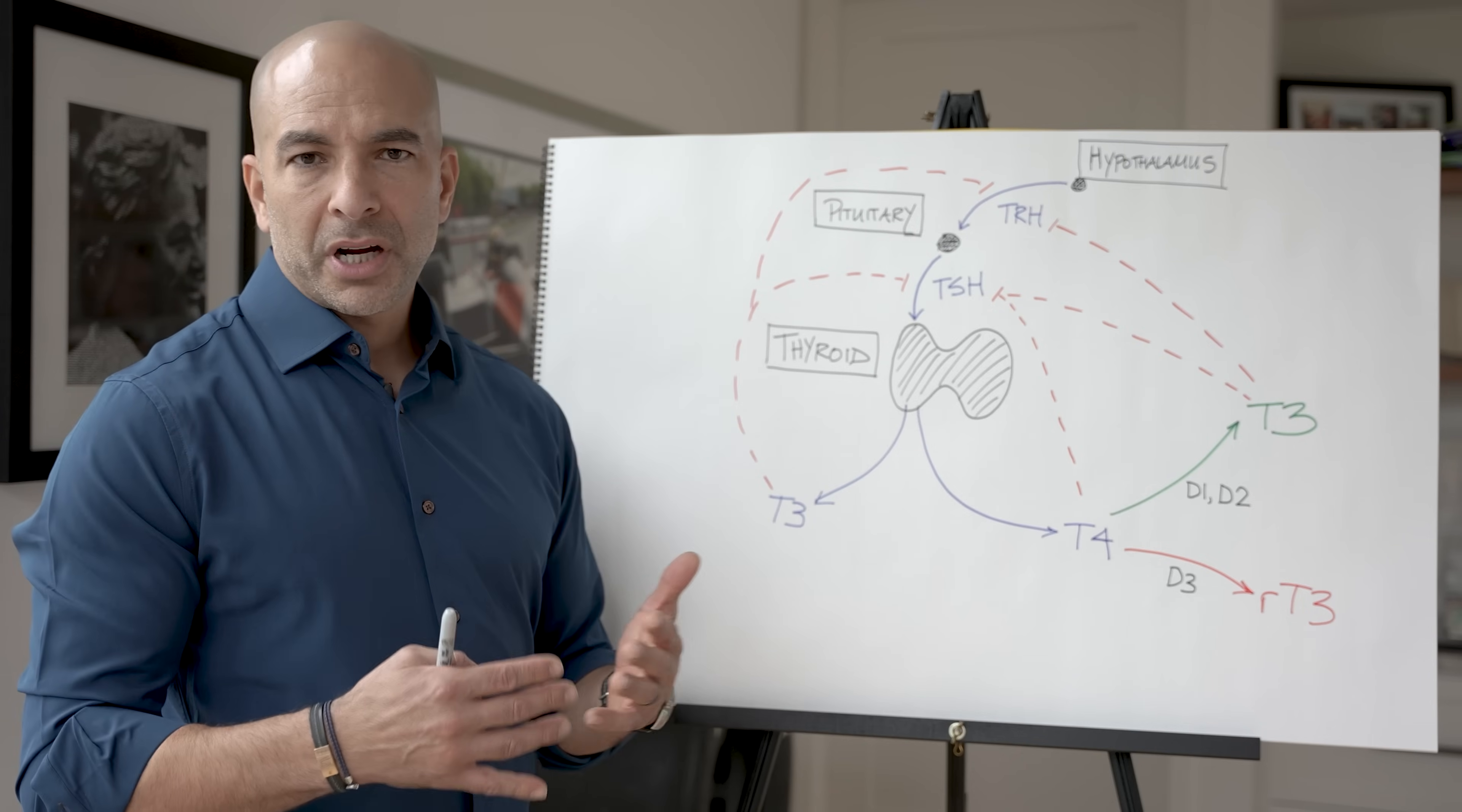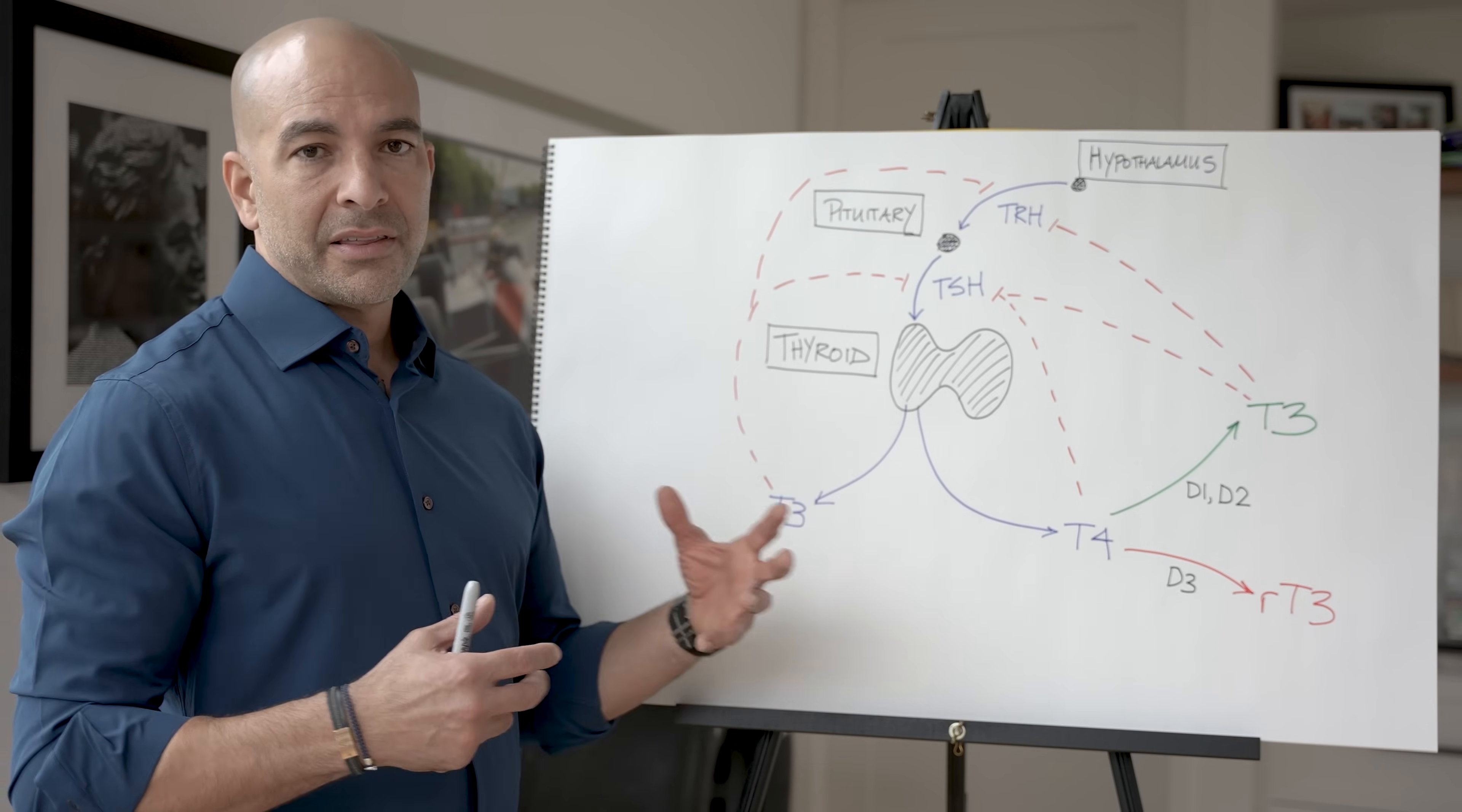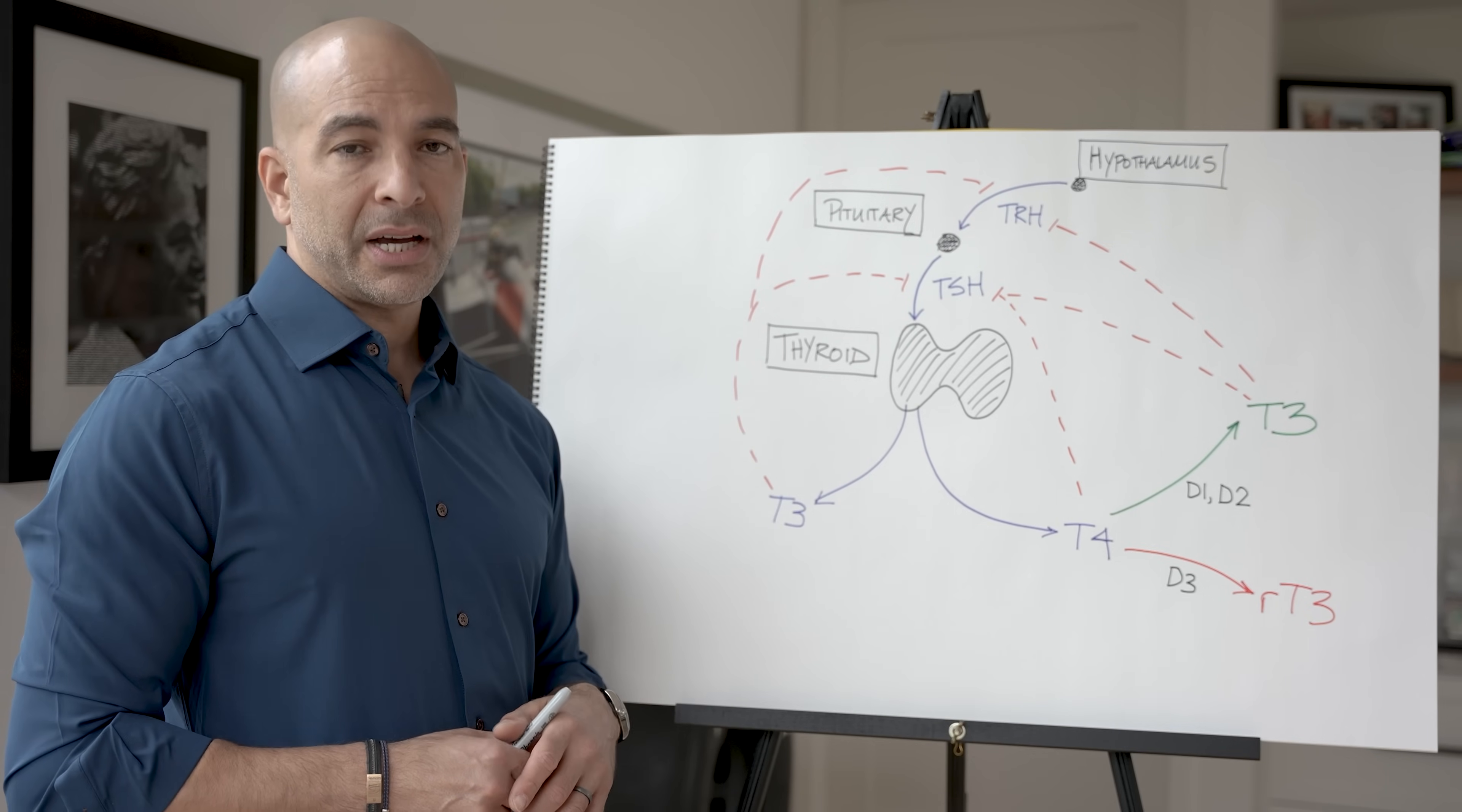Where do the 3 and the 4 come from? What are they referring to? Well, they're referring to the number of iodines that are in the molecule. So not surprisingly, T4 has four iodines. T3 has three iodines.